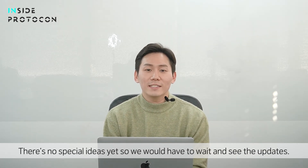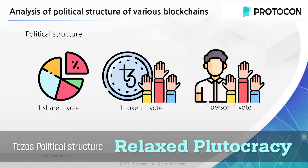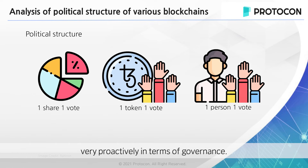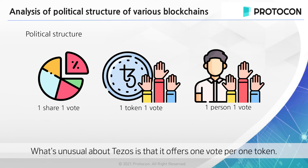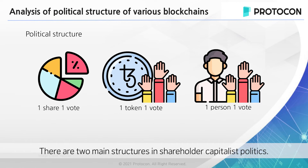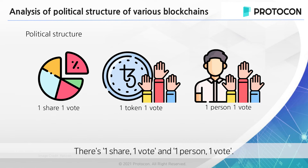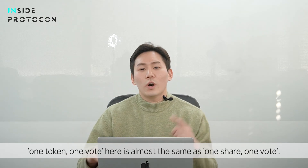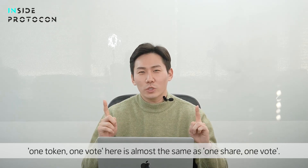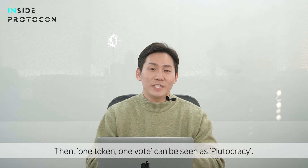There are no special ideas yet, so we would have to wait and see the updates. Tezos is working on the project by raising issues very proactively in terms of governance, and has a plan to govern all on-chain. What's unusual about Tezos is that it offers one vote per one token. There are two main structures in shareholder capitalist politics: one share, one vote, and one person, one vote. One vote per share is mainly adopted by corporations, and its downside is that it can be called plutocracy. One token, one vote is almost the same as one share, one vote, and can therefore also be seen as plutocracy.